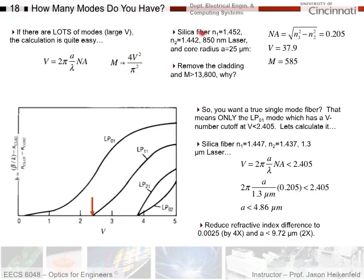And so let's do a sample calculation. Let's assume we have a silica fiber, which is silicon dioxide. Refractive index of the core is 1.52. The cladding is 1.442. So it's a difference of 0.01. 850 nanometer wavelength of light and a core radius of 25 microns. Well, easy to calculate numerical aperture with the refractive indices. I can calculate V quite easily because I've got wavelength of light and core radius, and I get 37.9. And if I put that, therefore, into M, I get 585 modes for this fiber. So this is far from a single-mode fiber. It would have a lot of dispersion, of optical dispersion.